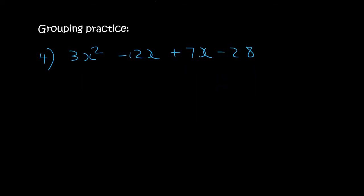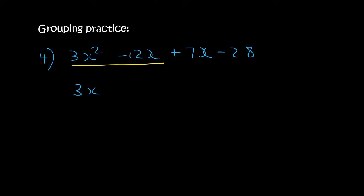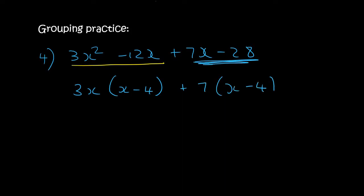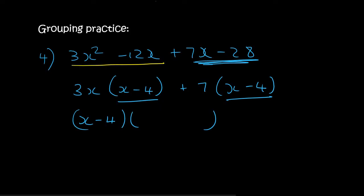Here's another one. In the first two terms we could take out 3x and then you'd be left with x minus 4. In the second two terms you could take out a 7 and you'd be left with x minus 4. So x minus 4 is common, we take that out in the front, and then we're left with 3x plus 7.